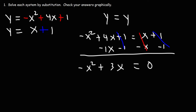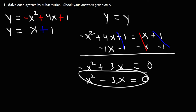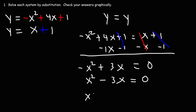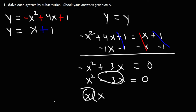Now I'm going to multiply every term by negative 1. This changes negative x squared to positive x squared, and 3x becomes negative 3x. Then we factor out the GCF, which is x. x squared divided by x is x, and negative 3x divided by x is negative 3.